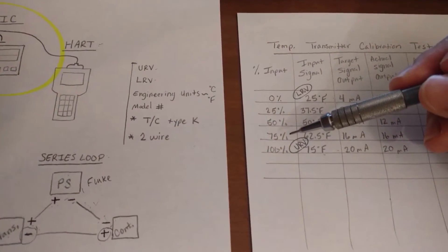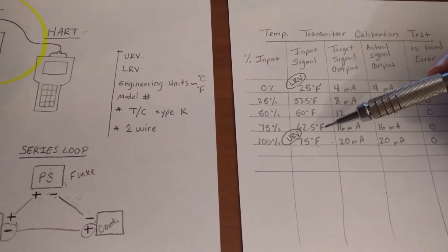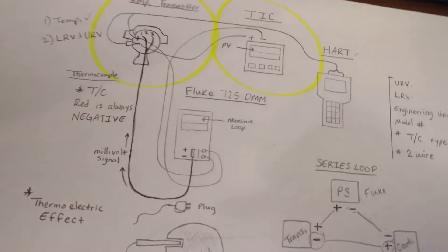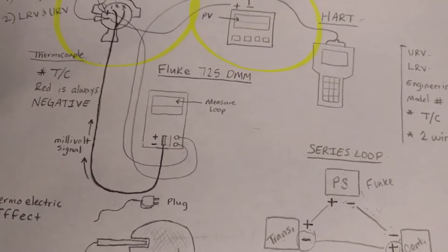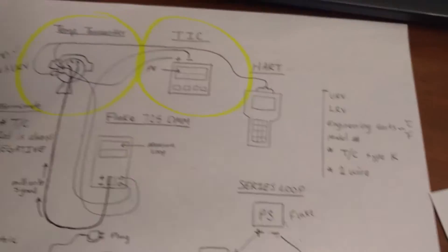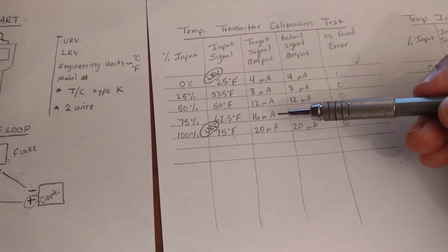So let's say we were testing it at 75% of our signal which would be 62.5 degrees Fahrenheit, we would send a millivolt signal that represents 62.5 degrees Fahrenheit and it would go to the pressure transmitter.